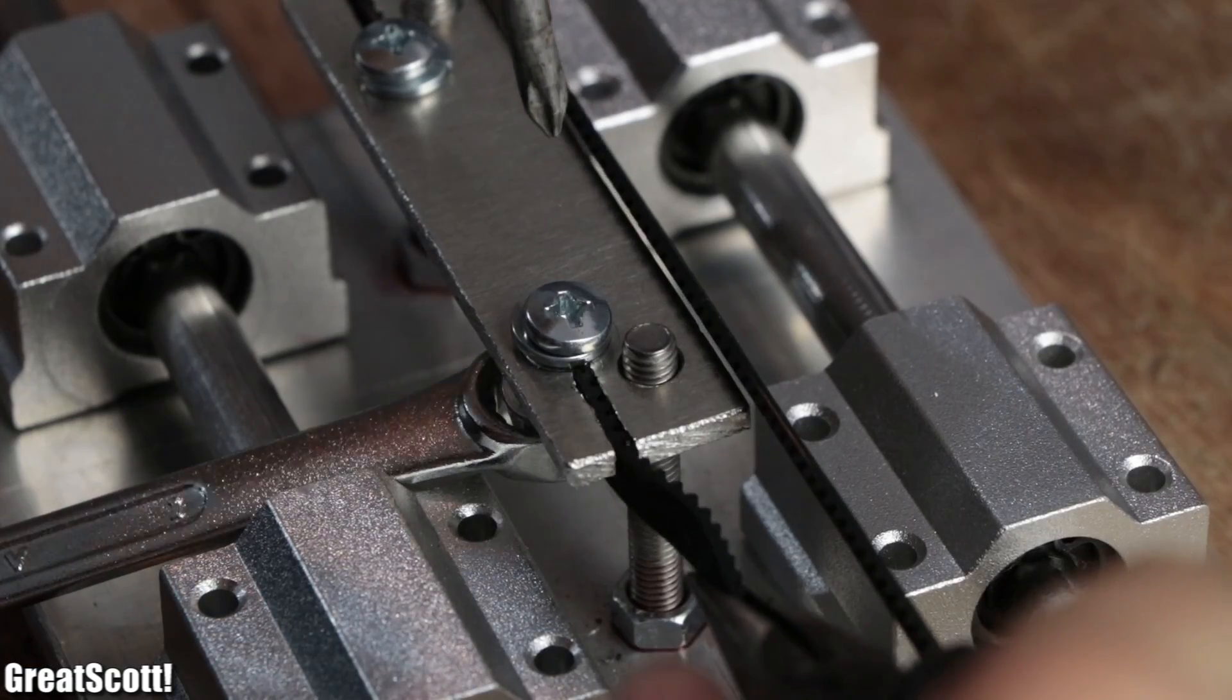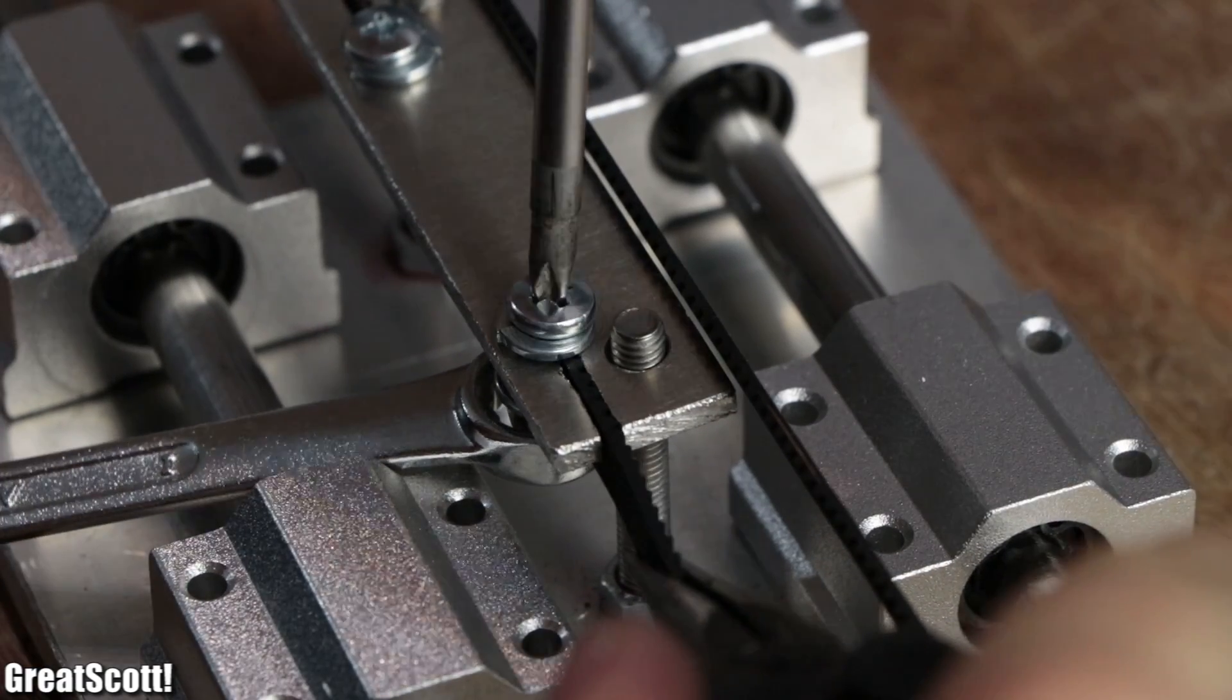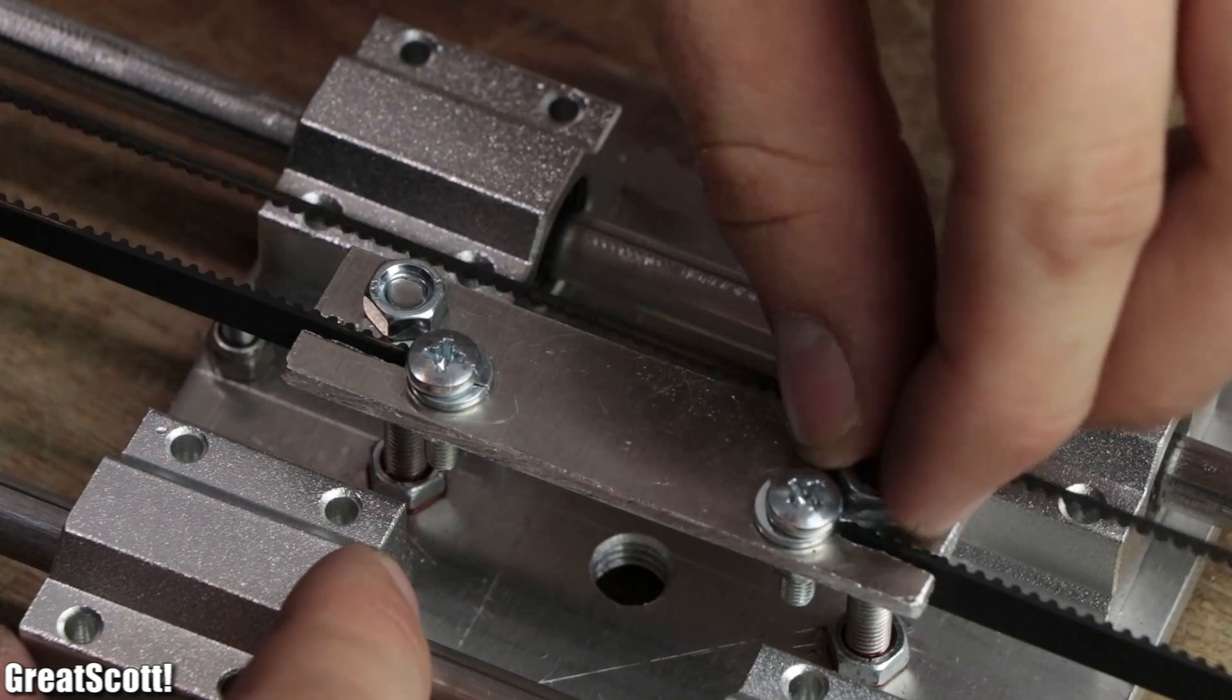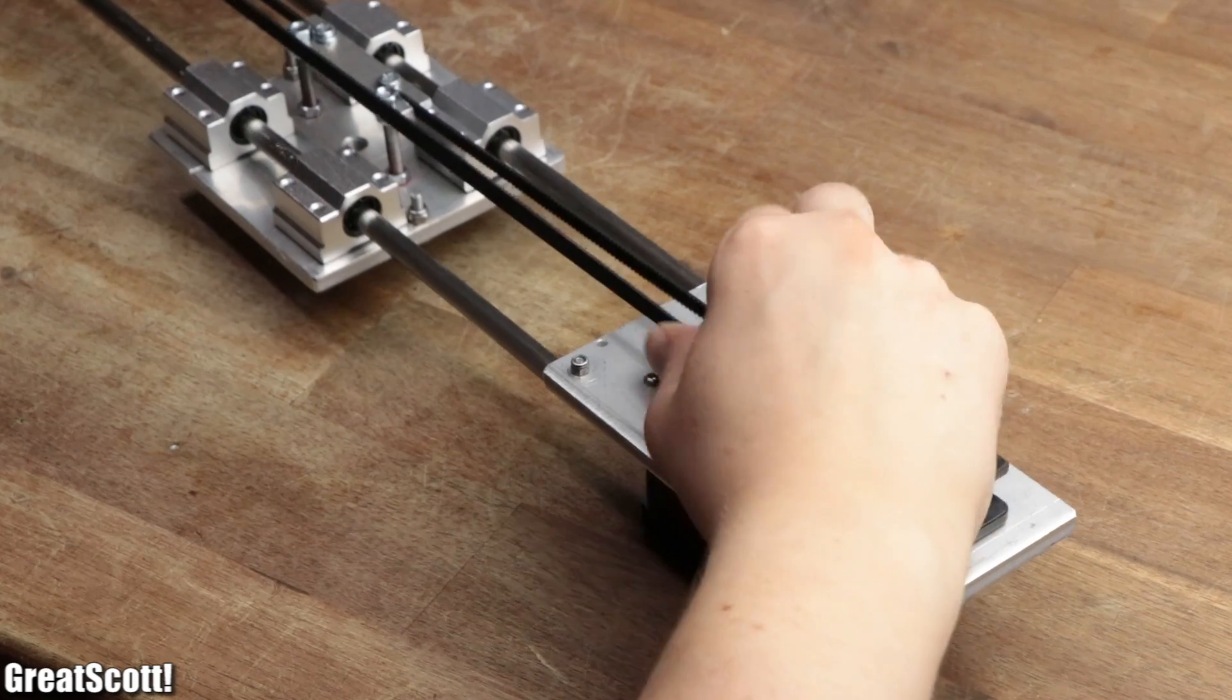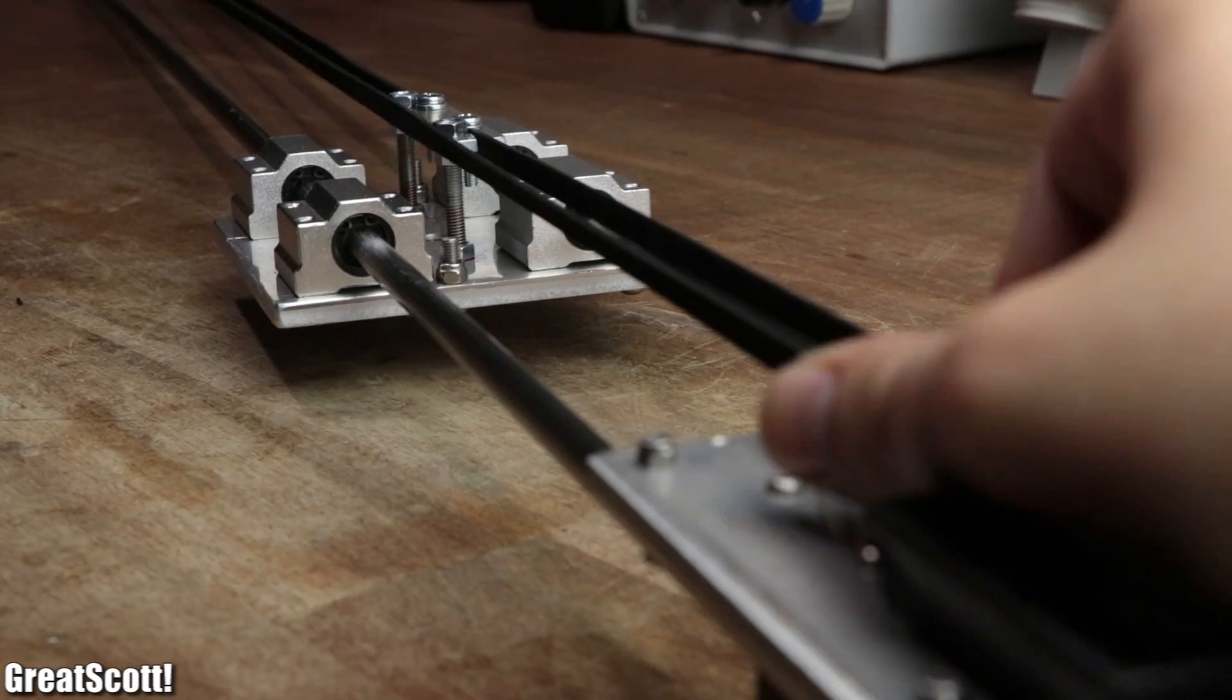I tensioned the timing belt while mounting it to the other side and completed the motor system by adding two nuts on top. After a successful test of moving the platform with the timing belt, it was time for the electronics.